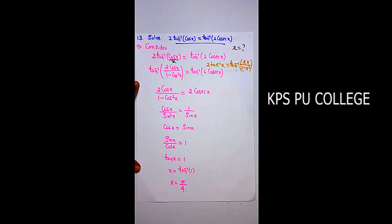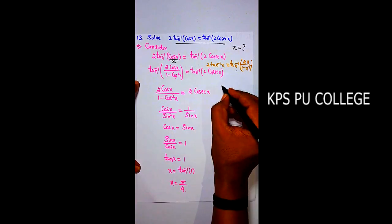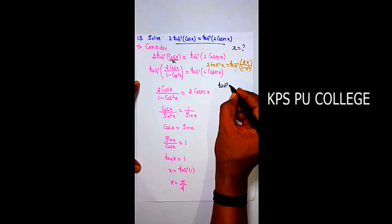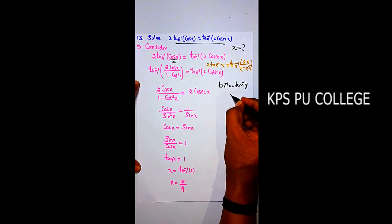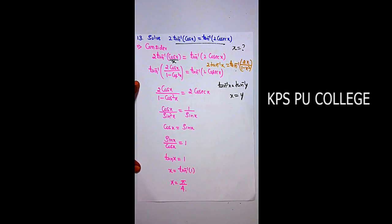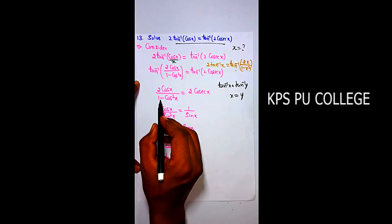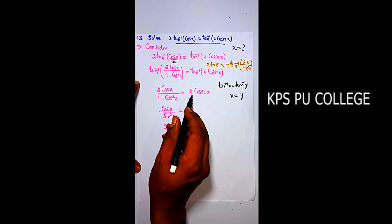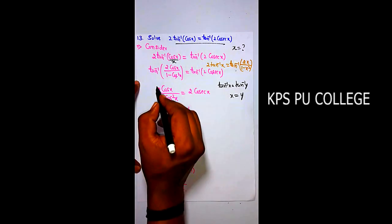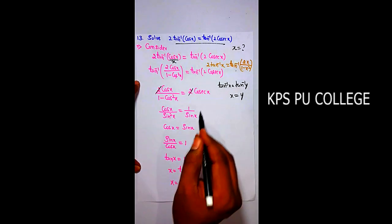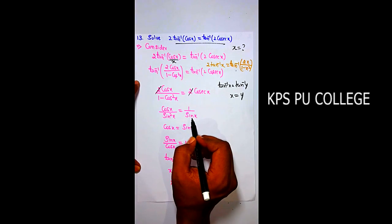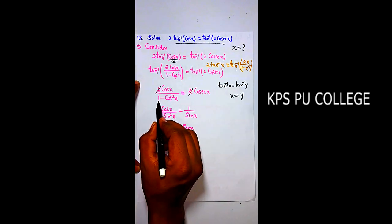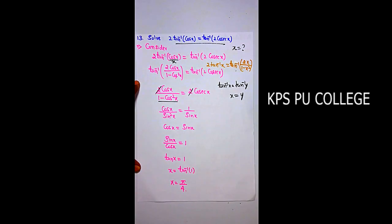Using the formula 2tan⁻¹(X) = tan⁻¹(2X/(1-X²)), with X = cosx: LHS = tan⁻¹(2cosx/(1-cos²x)). Since tan⁻¹(A) = tan⁻¹(B) implies A = B, we get 2cosx/(1-cos²x) = 2cosecx. The 2 and 2 cancel, and 1-cos²x = sin²x.